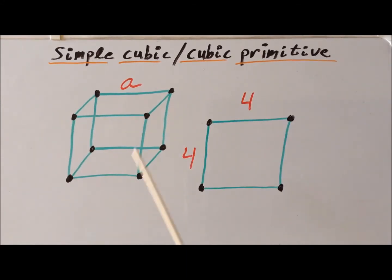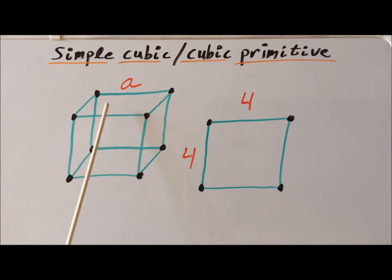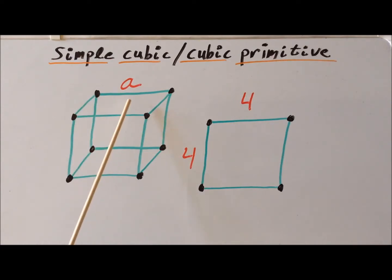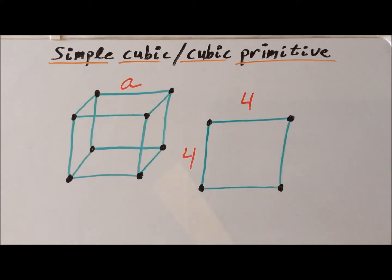Suppose instead of having an infinite crystal, we truncate it — we cut off the crystal at one of the planes. If we terminate the bulk structure along this particular top plane, almost as if we had an infinite structure and just chopped along to expose this plane, continuing in infinite x and y directions, we will recognize that the surface structure we see is square.